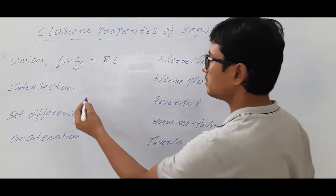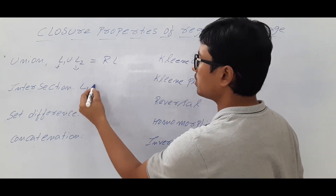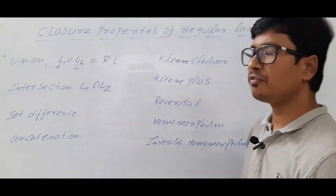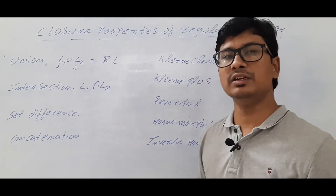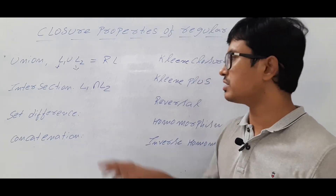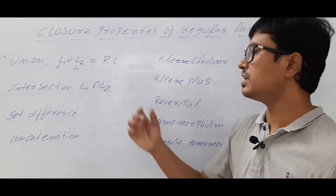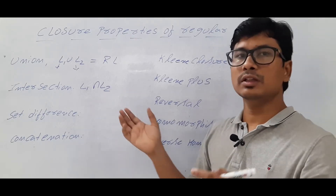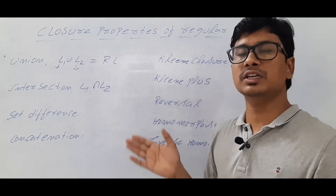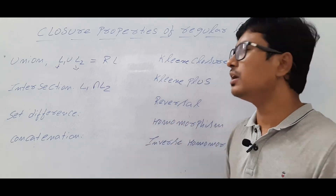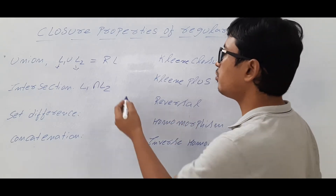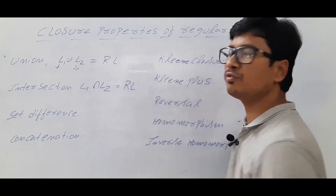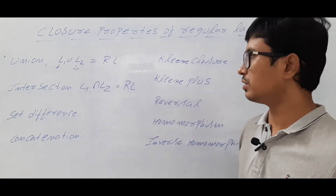Similarly, coming to intersection: you have two languages L1 and L2. L1 intersection L2 — if L1 is a regular language and L2 is a regular language, the intersection means the common strings between them. If I take it, whether it will form a regular language or not — yes, it will also form a regular language.